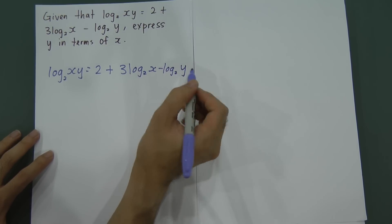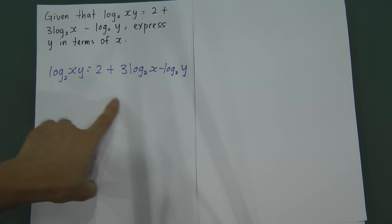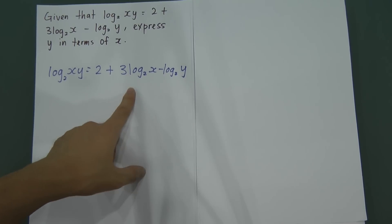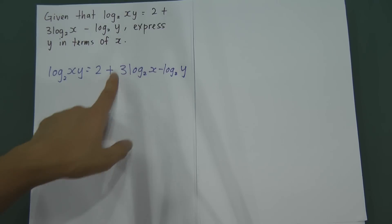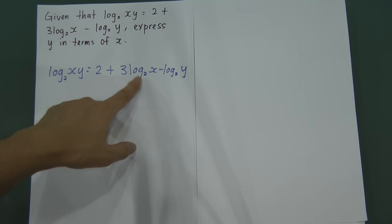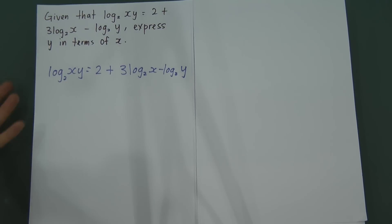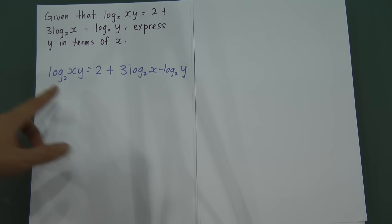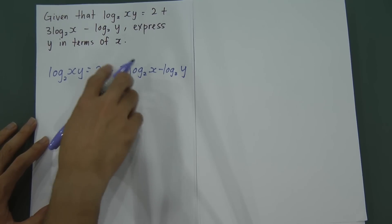In order to solve this kind of question, the first step is you have to change everything to log base 2. After you change everything to log base 2, you factorize out the log 2. After you factorize out the log 2, you can simplify. You cannot press the calculator for log 2 — the calculator only works for log 10. So I change everything to log base 2. You already have log base 2 here.